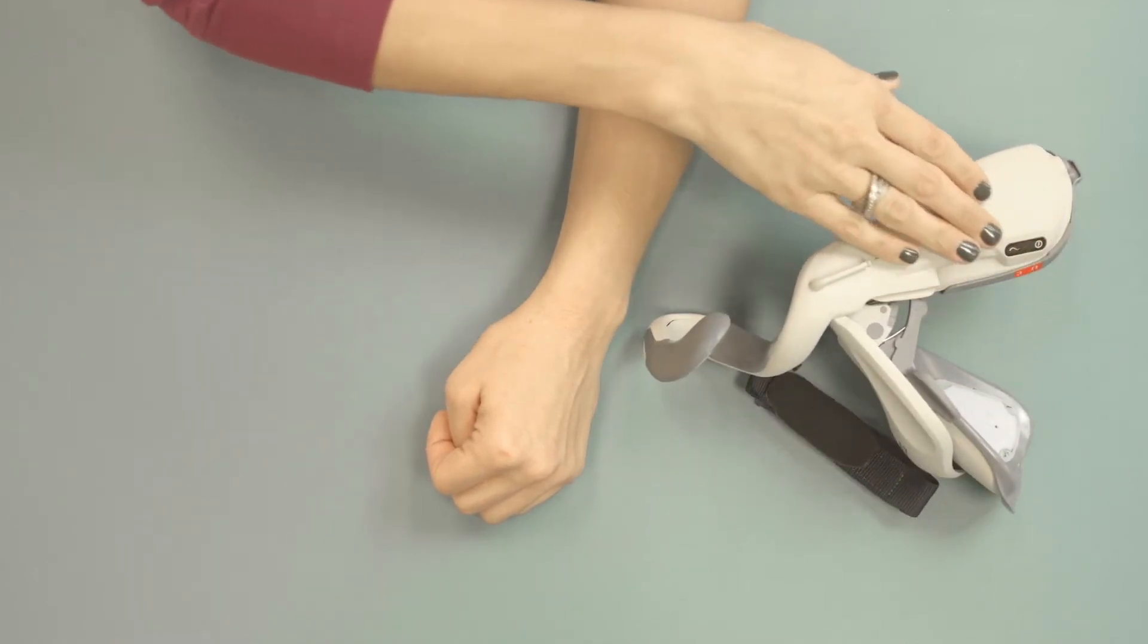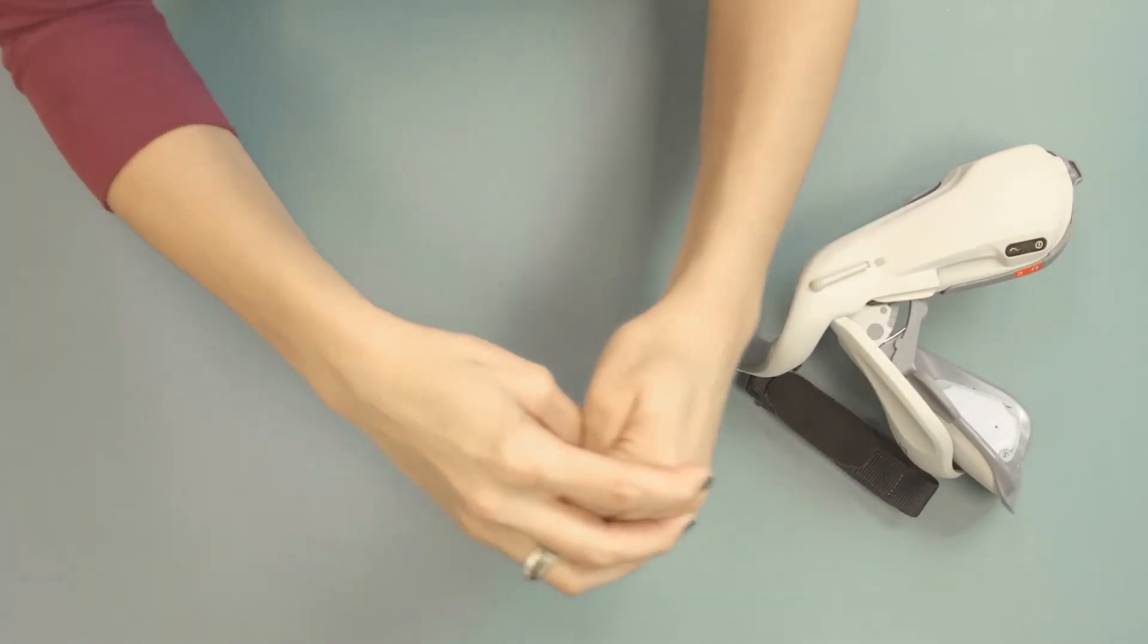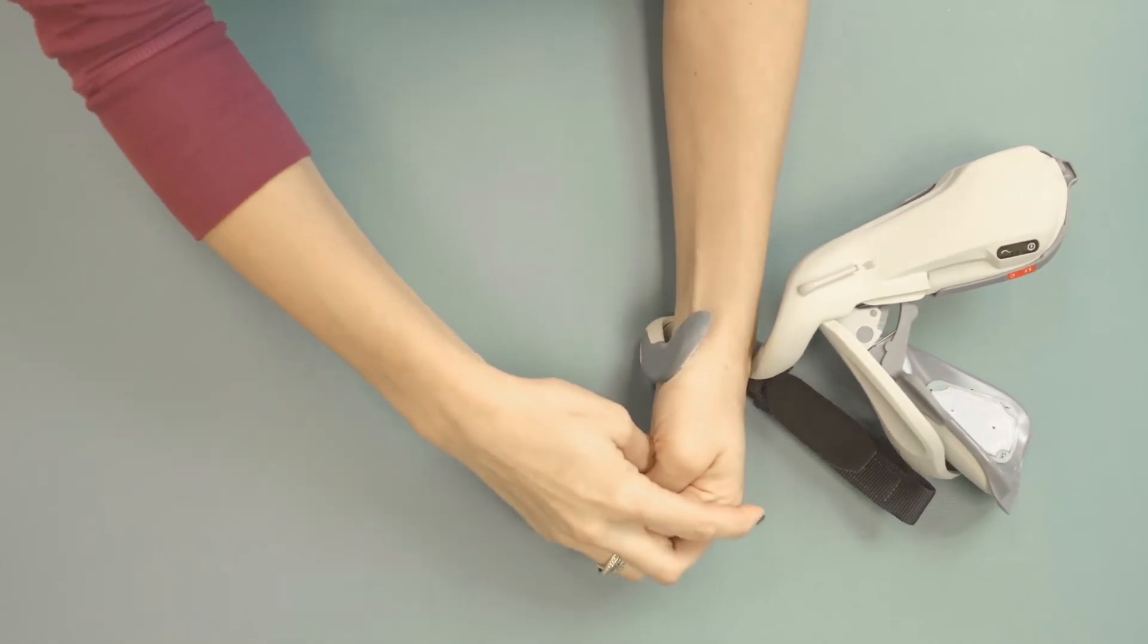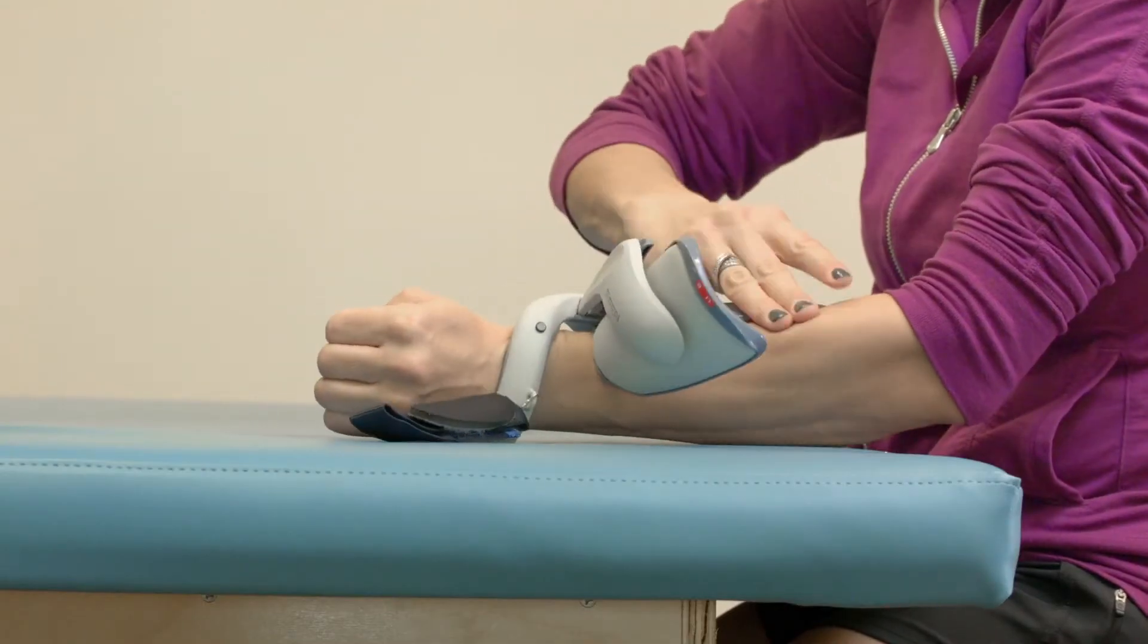Reorient the orthosis so that you can easily place your wrist in the spiral end, and then bring the orthosis flexor support to your forearm.